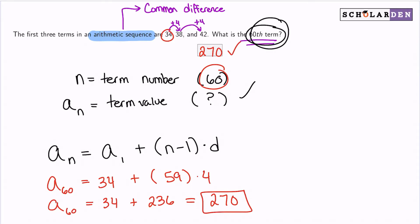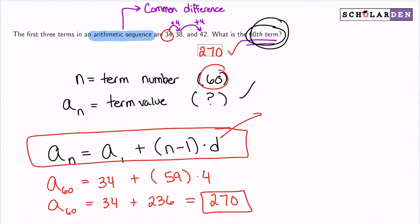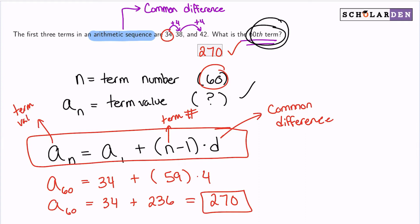That's the formal way of doing it using the arithmetic sequence formula. Remember: D is your common difference, n is your term number, a_sub_n is your term value, and a_sub_1 is your first term. I hope this helps — I'll highlight this for your convenience. We'll see you in the next question.